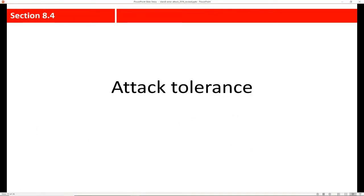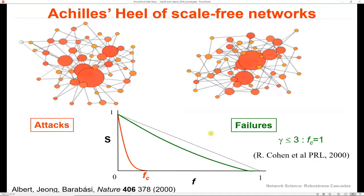So scale-free networks appear to be very robust. They can handle random failure. However, can they handle a coordinated attack? Are they tolerant to attacks? So we saw the behavior of the network as it experienced random failures. Let's take a look at what happens if we have a coordinated attack on hubs.